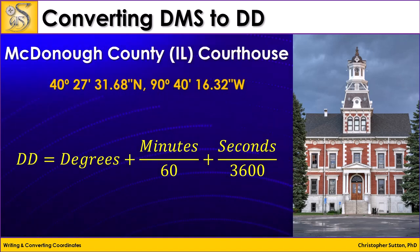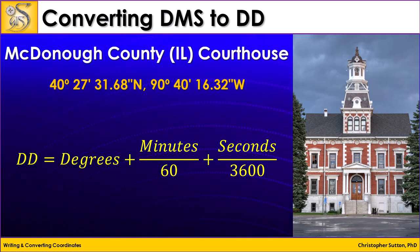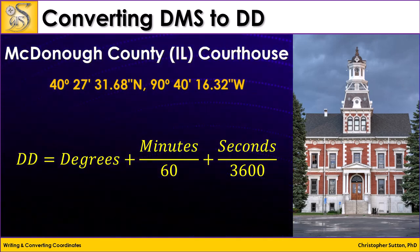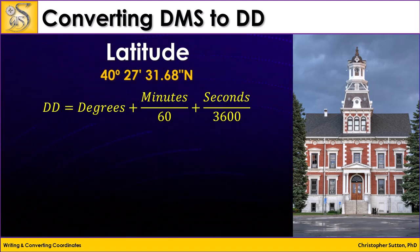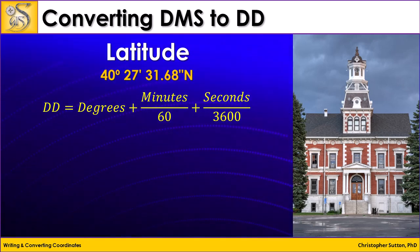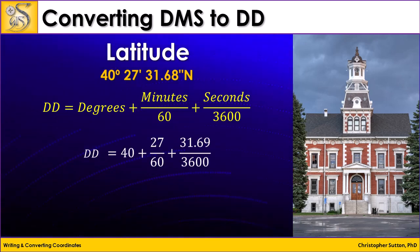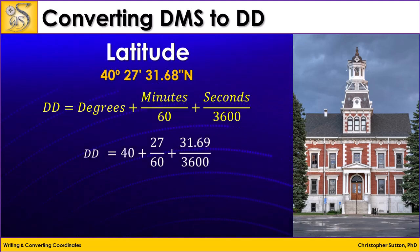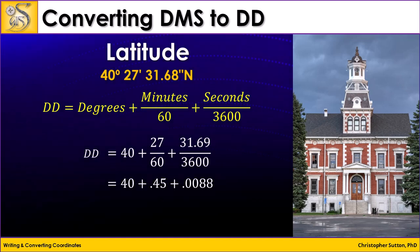The coordinate position for the courthouse is 40 degrees, 27 minutes, 31.68 seconds north, 90 degrees, 40 minutes, and 16.32 seconds west. So let's convert this to decimal degrees, starting with latitude. Decimal degrees equals degrees plus minutes divided by 60 plus seconds divided by 3600, which is 40 plus 27 divided by 60 plus 31.68 divided by 3600, which gives us 40 plus 0.45 plus 0.0088.